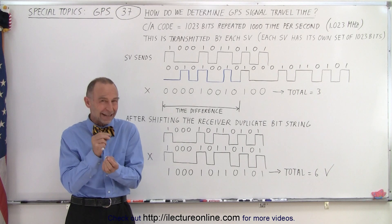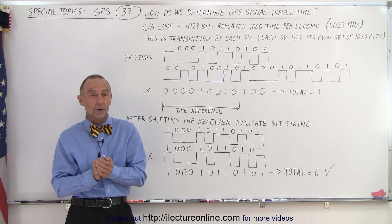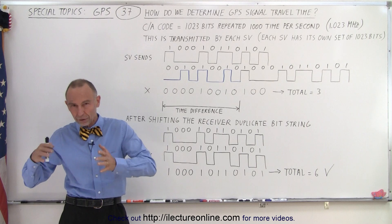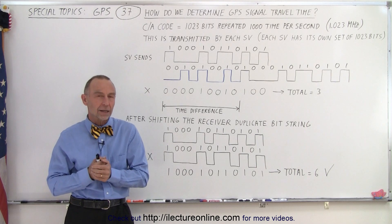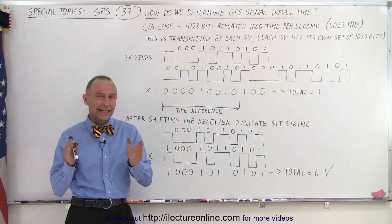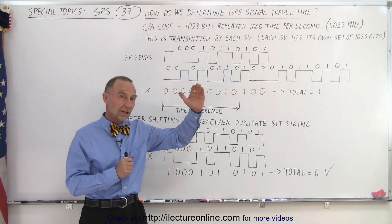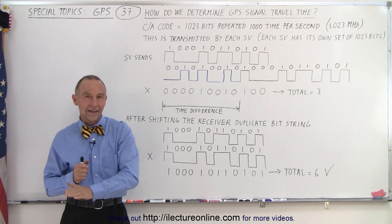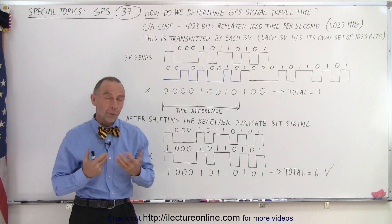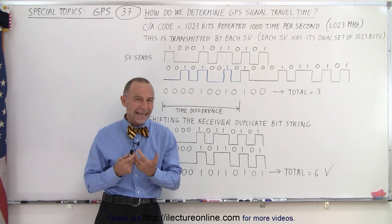What's the design to come up with the exact time that it took? Of course we need to adjust that for all the other potential errors on the clock, but we want to calculate the exact delta time between when it left the SV and when it arrived at the receiver. So the way that's done is we use the CA code.